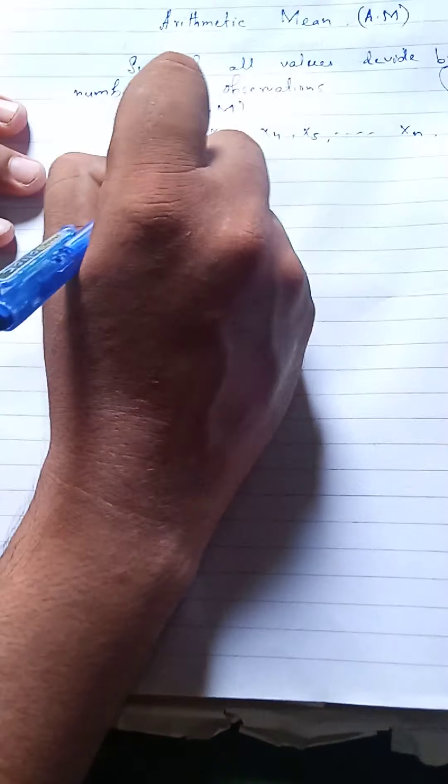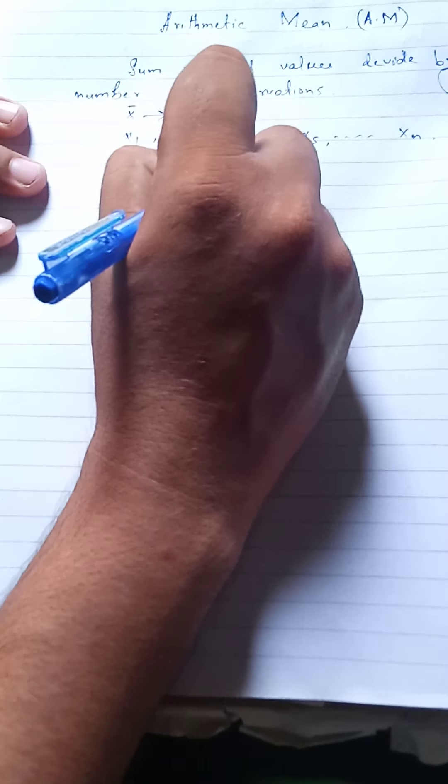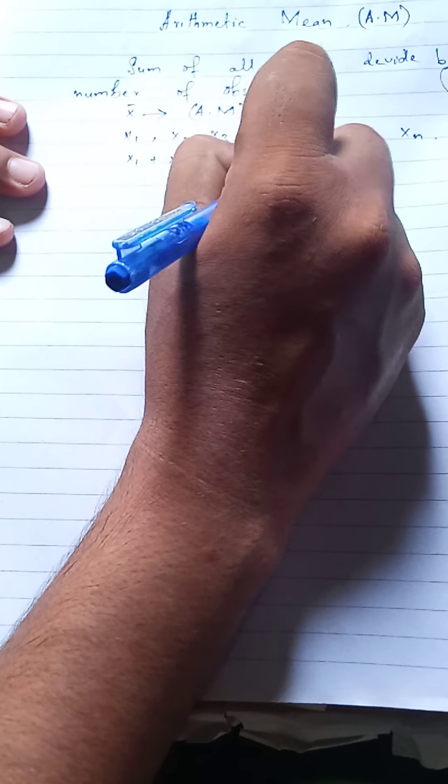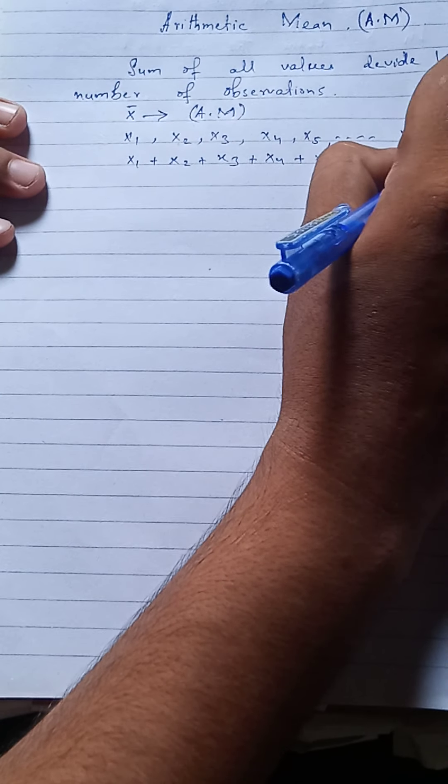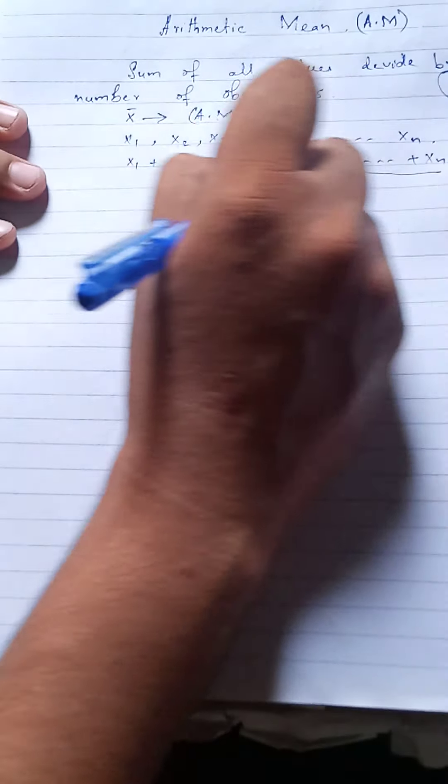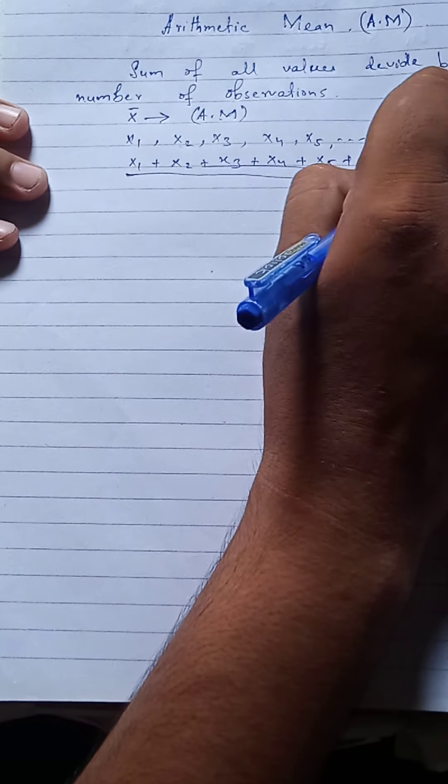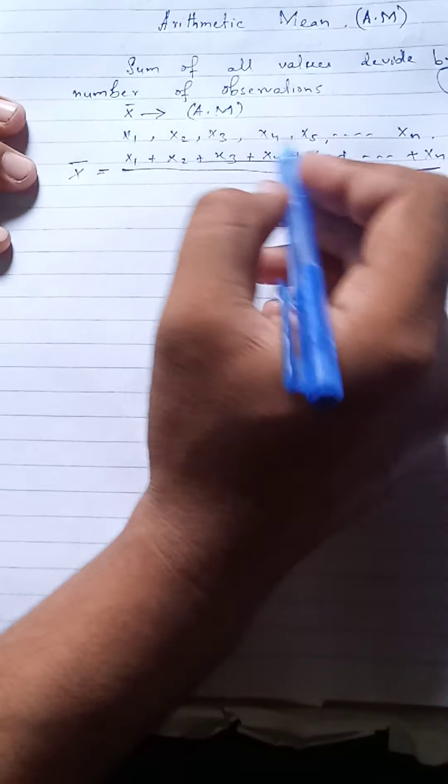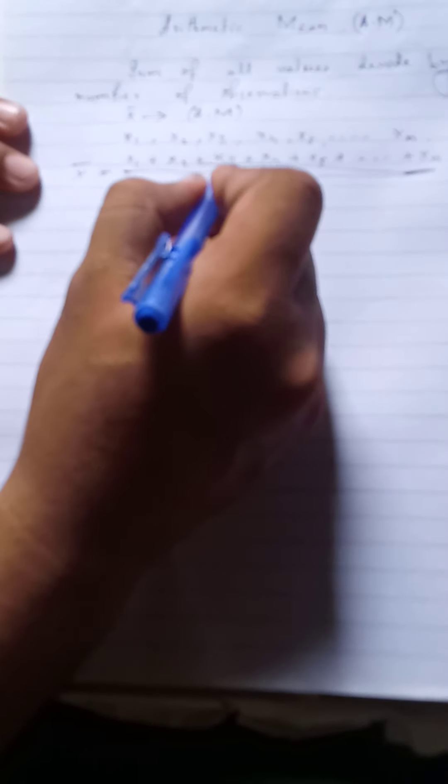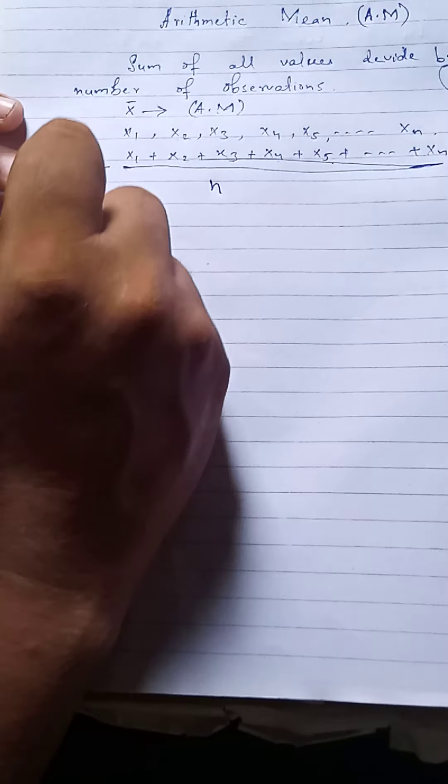x1 plus x2 plus x3 plus x4 plus x5 plus xn. अब इसको हम divide करेंगे किससे? Number of observations: 1, 2, 3, 4, 5 up to n. Number of observation n है तो n से करेंगे।